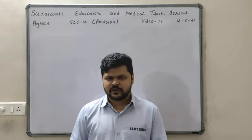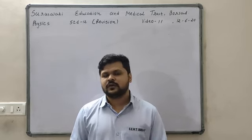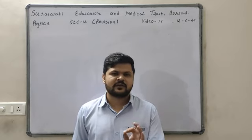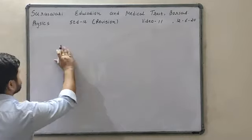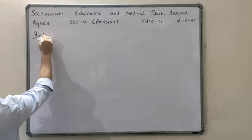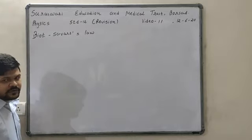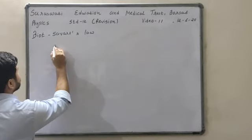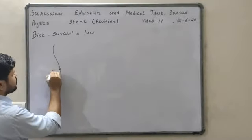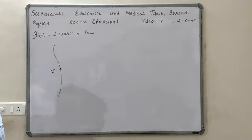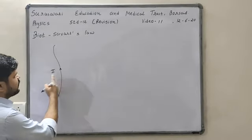With Biot-Savart law we can find out the magnetic field. This is the first law that achieved finding the magnetic field. Suppose this is one wire of some shape. From this wire some current I is flowing, and this wire is generating a magnetic field around it.